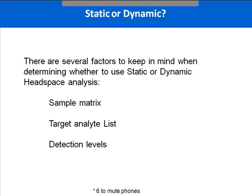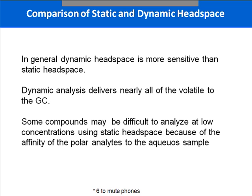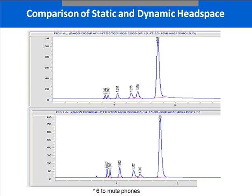There are several factors to keep in mind when determining when to use static or dynamic headspace analysis: the sample matrix, the target analyte list, and the detection limits. In general, dynamic headspace is more sensitive than static. Dynamic delivers nearly all the volatiles to the GC. Some compounds may be difficult to analyze at low concentrations using static because of the affinity of polar analytes to the aqueous sample. In closing, this is a comparison of the static and dynamic headspace results for blood alcohol. The top chromatogram is a dynamic analysis using the trap method for blood alcohols on a BAC1 column. The bottom is a static analysis using the same BAC1 column. Both indicate good chromatography, while the dynamic mode presents lower detection limit capabilities.